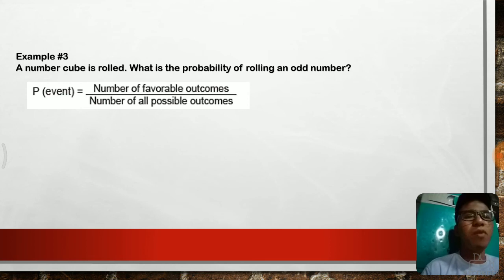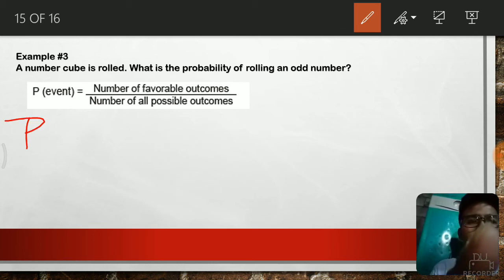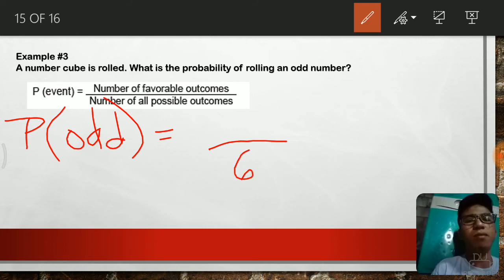What is the probability of rolling an odd number? Let's start solving this one. Our event here is getting an odd number. We have 6 faces, meaning we have 6 numbers. So that will serve as the number of all possible outcomes.